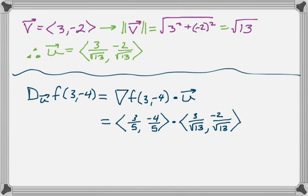So it's the sum of the products of corresponding components. We get 9 over 5 root 13, that's 3/5 times 3 over root 13.